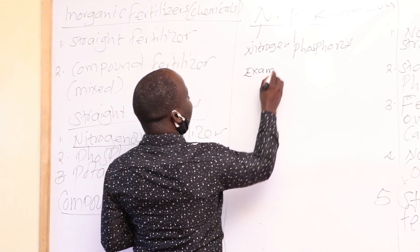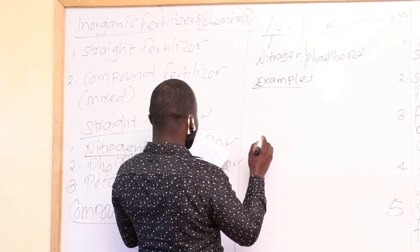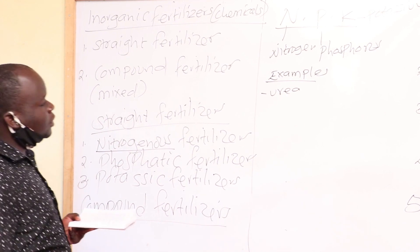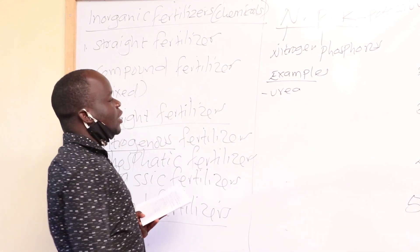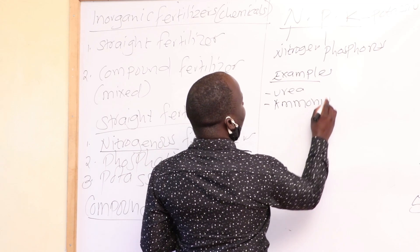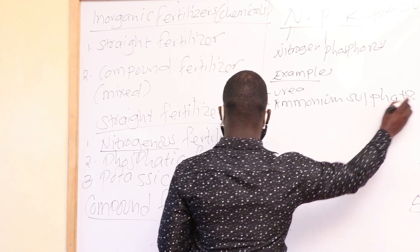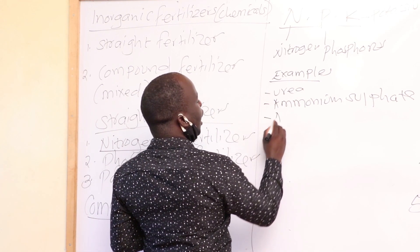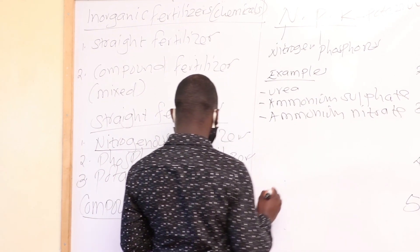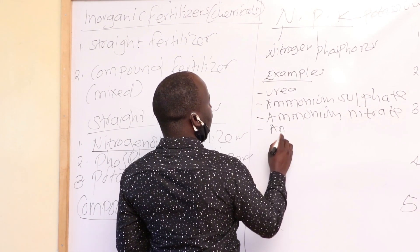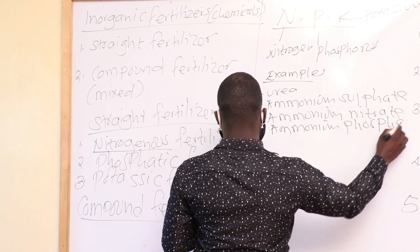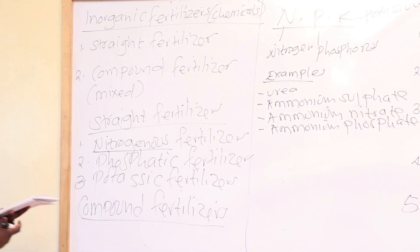Let's look at examples of nitrogenous fertilizers. We have urea — I think most of our parents, or you yourself, may have come across the word urea. That one is a nitrogenous fertilizer. We also have ammonium sulfate, ammonium nitrate, and so on and so forth. Those are examples of nitrogenous fertilizers.